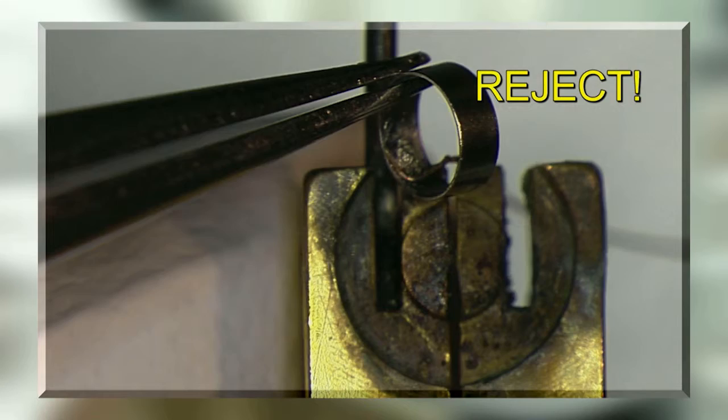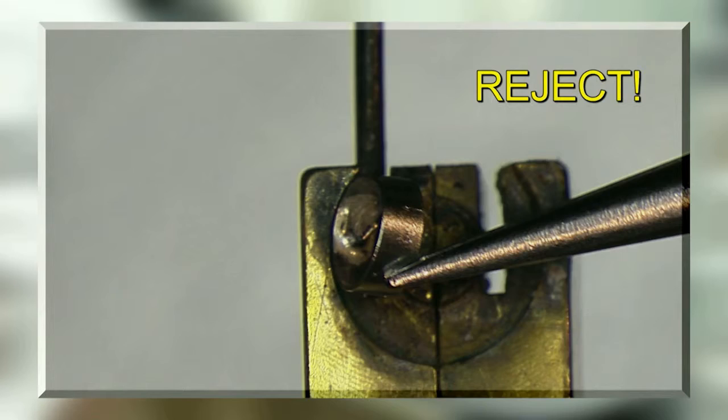If the paste is clumpy, it was underheated. If the braze and or the wire is darkened, then it was overheated.